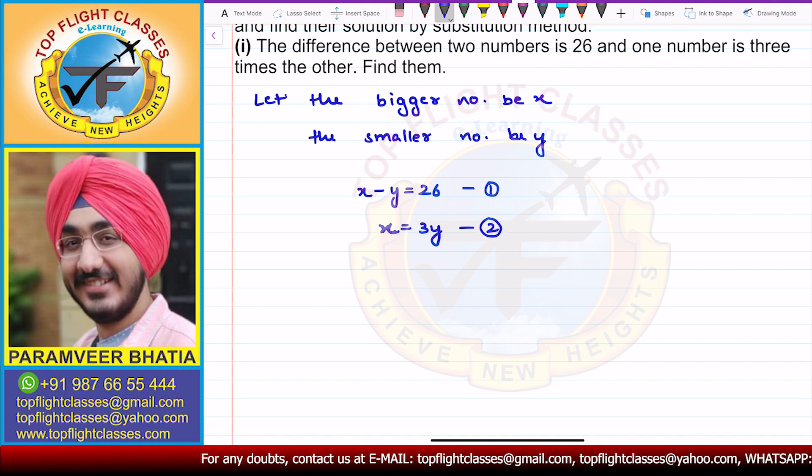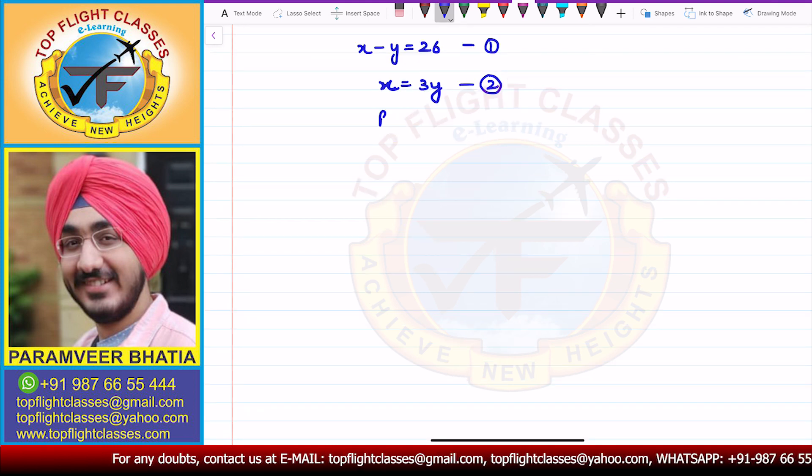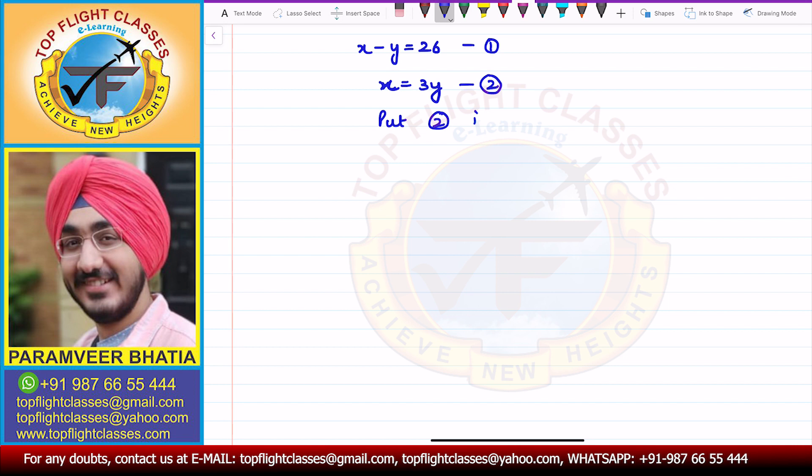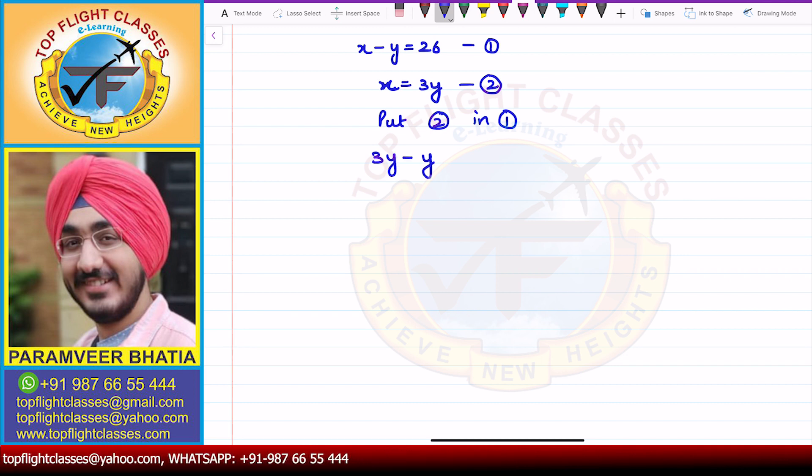So now I will put equation 2 in equation 1 because x is equal to 3y. That means x value 3y we can substitute. So from here I will get 3y minus y is equal to 26. From here I will get 2y is equal to 26. From here I will get that y is equal to 13.